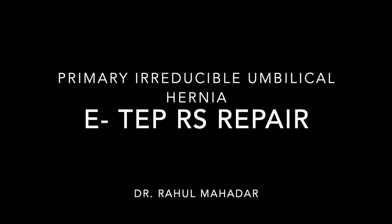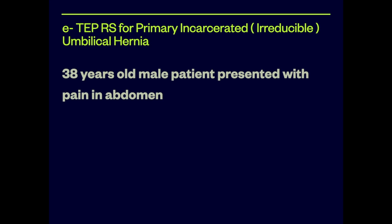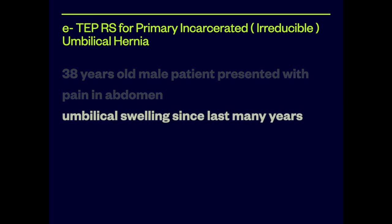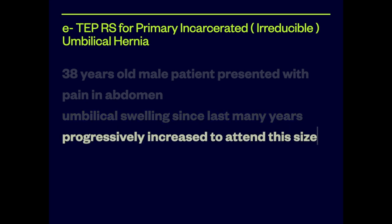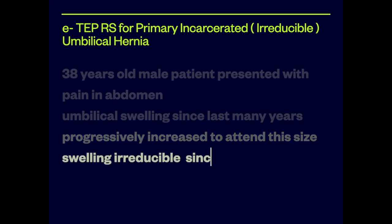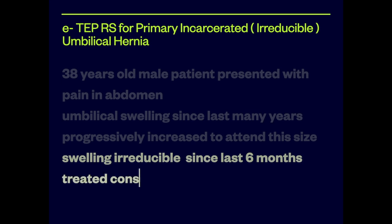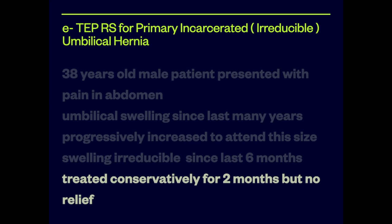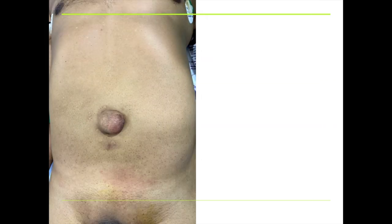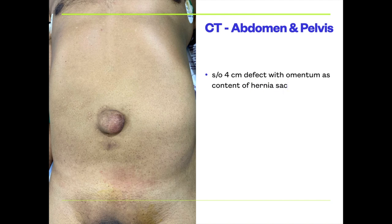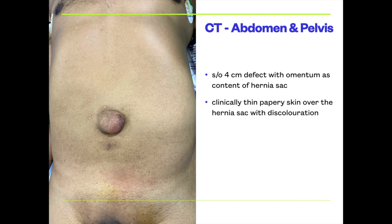Hello friends, today we are presenting a primary umbilical hernia — an incarcerated irreducible umbilical hernia ETEPR Repair. A 38-year-old male patient presented with pain in the abdomen and umbilical swelling for many years, progressively increasing in size. The swelling has been irreducible for the last 6 months. The patient had repeated abdominal pain and was treated conservatively for 2 months but with no relief. CT scan abdomen revealed a defect of around 4 cm diameter, with hernia content being omentum. Clinically, thin papery skin over the hernia with fat discoloration is noted.